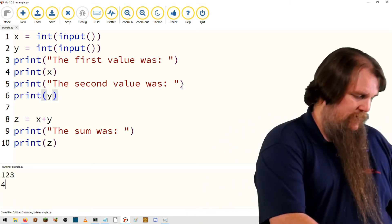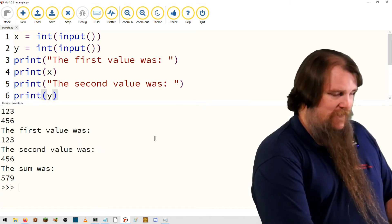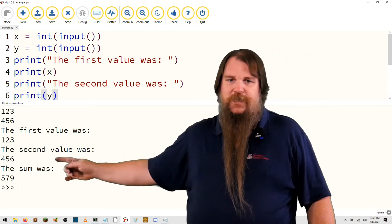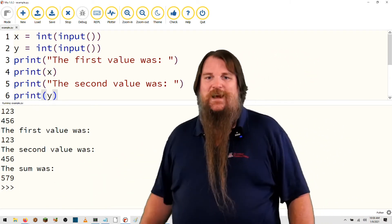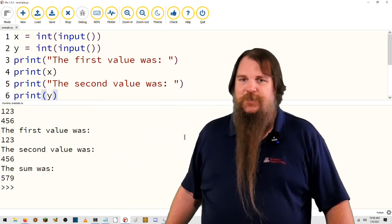All right, one, two, three, four, five, six. It printed out. The first value was one two three. The second value was four five six. The sum was five seven nine. One hundred and twenty-three plus four hundred fifty-six is five hundred and seventy-nine.